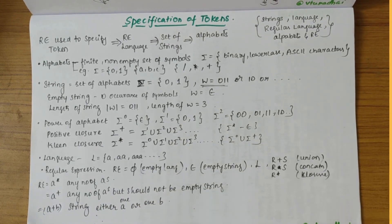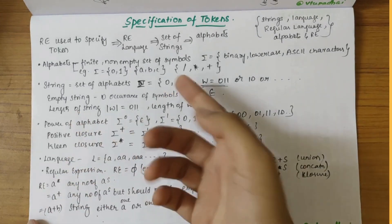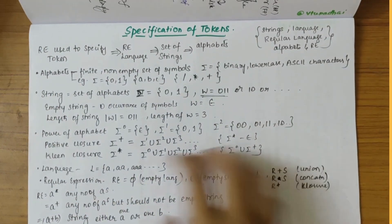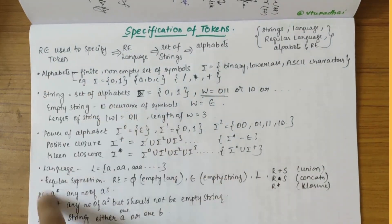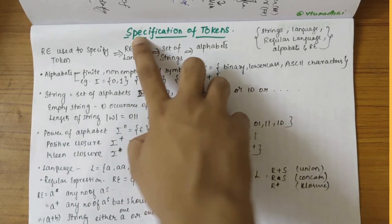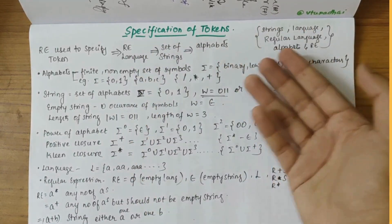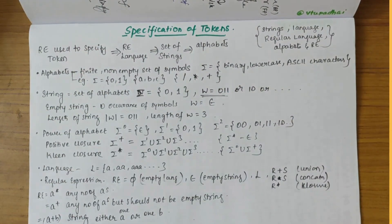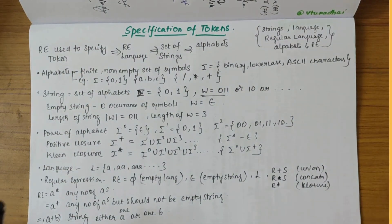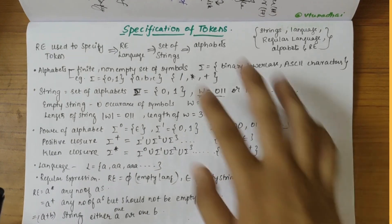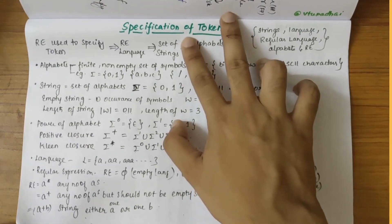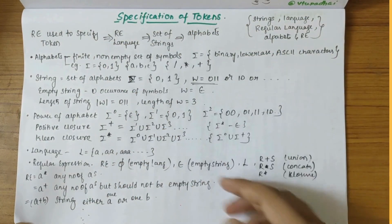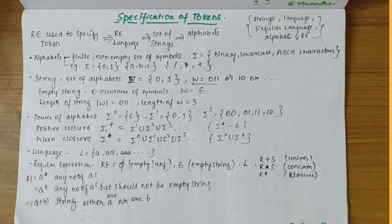I've made a separate video explaining regular expressions in more detail. Once we understand all these terms — alphabets, strings, language, and regular expressions — it becomes easy to specify tokens, since we use regular expressions to specify tokens. I hope you have understood this theoretical topic of specification of tokens.